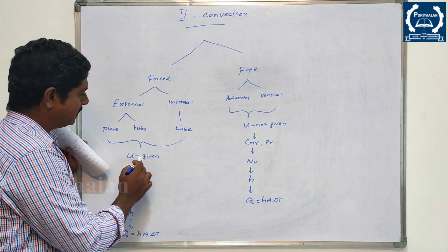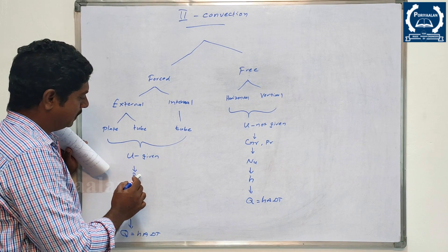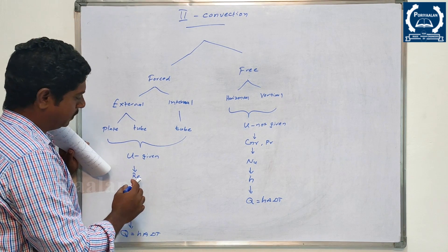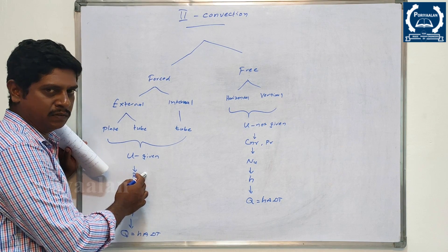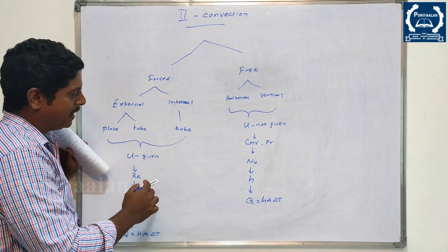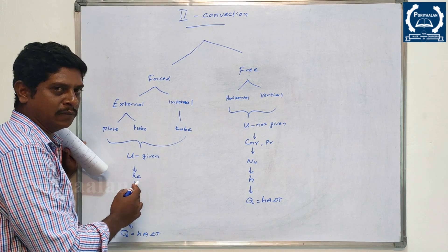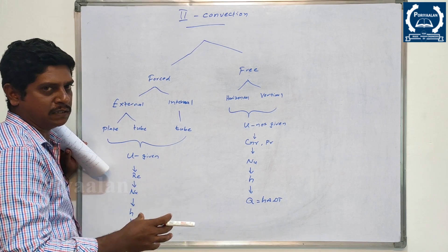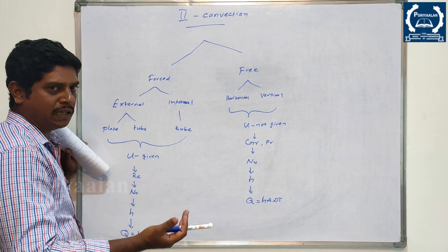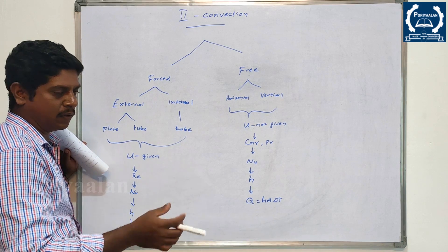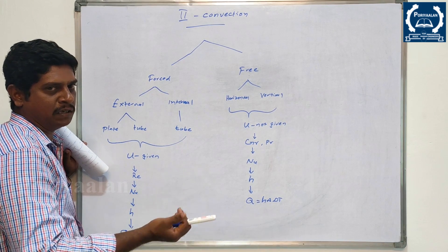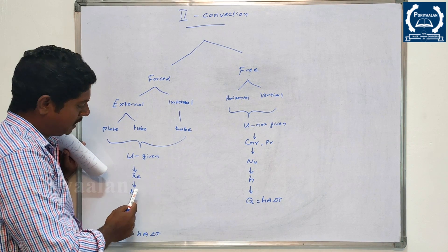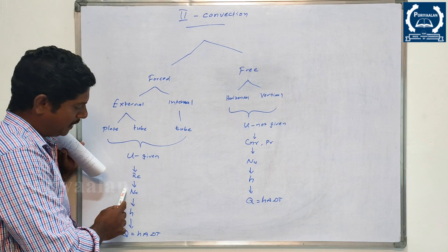If there is a velocity, we first find the Reynolds number. The Reynolds number Re equals U·D divided by ν. The Reynolds number determines laminar flow or turbulent flow. For laminar flow, we follow one set of formulas; for turbulent flow, we follow another set of formulas. Then we continue to find the Nusselt number.